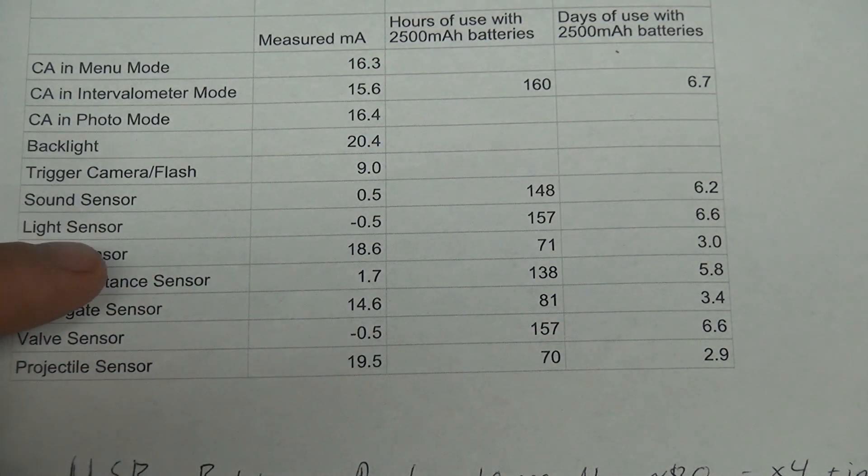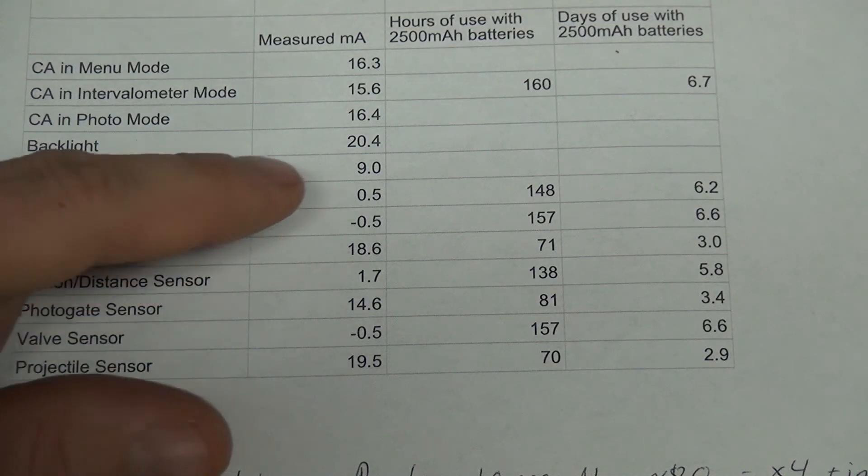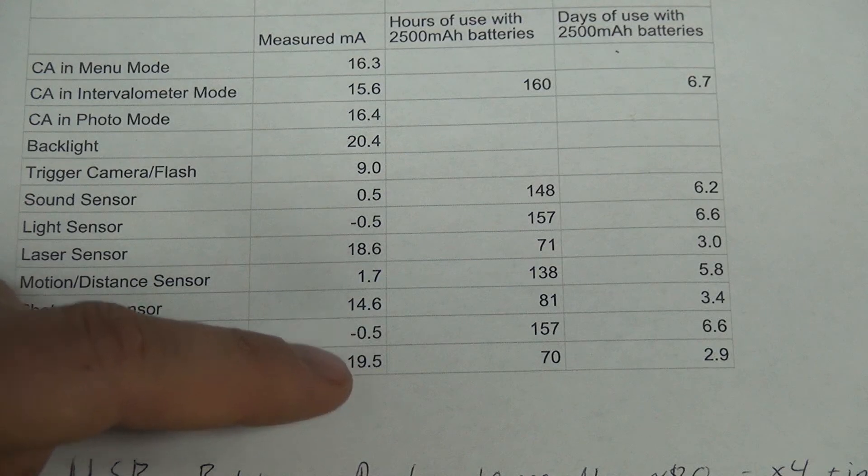Now I'm going to talk about the different sensors. You've got the sound sensor, the light sensor, laser sensor, the motion and distance sensor, the photo gate sensor, valve sensor, projectile sensor. That's a list of probably some of my more popular sensors that plug into the Camera Axe and the amount of current that they use.